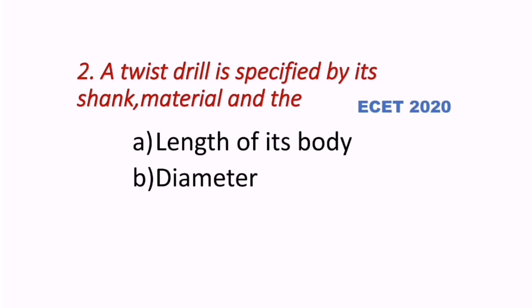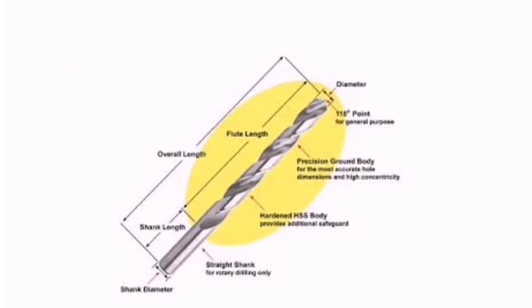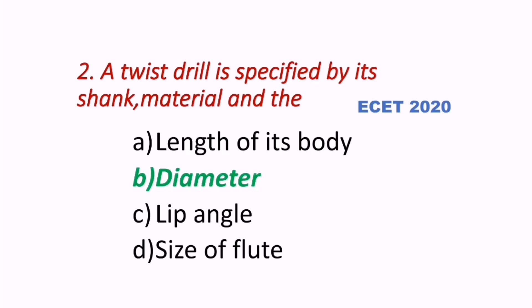Second question, which came in the ESET 2020 exam: A twisted drill is specified by its shank, material, and what else? The options include length of body, diameter, lip angle, and size of flute. The correct answer is diameter. A twisted drill is specified by its shank, material, and diameter — three things in total.